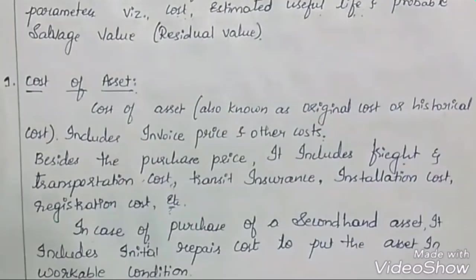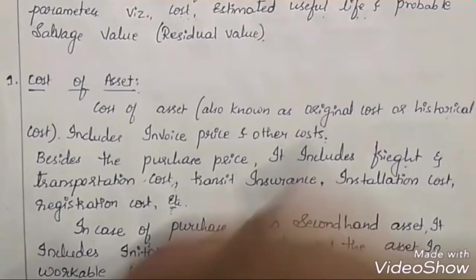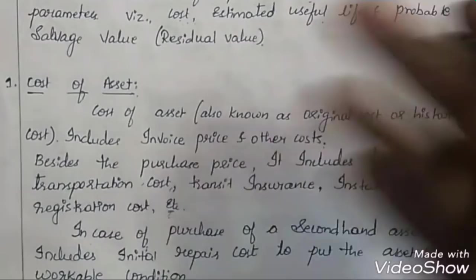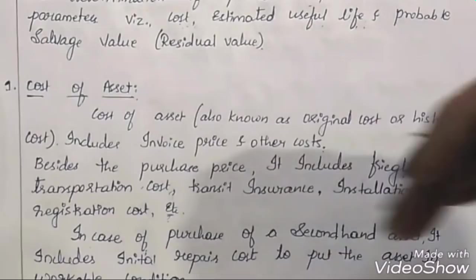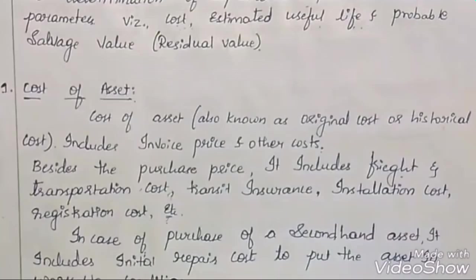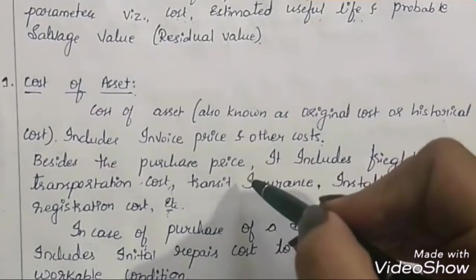For example, assume you purchased different parts of machinery. When you bring those parts and keep them in your godown, they won't work until you assemble and install the machinery. Those installation costs will also be added to the purchase price and treated as cost of asset. So remember: cost of asset includes all costs necessary for putting the asset into working condition.